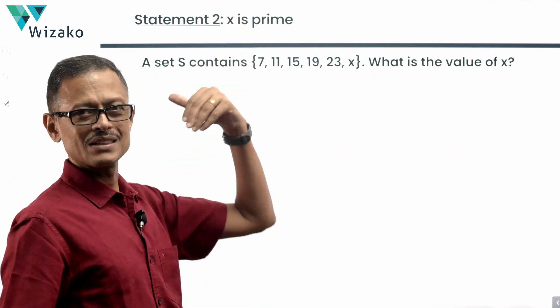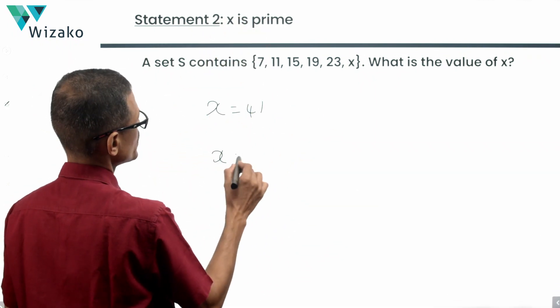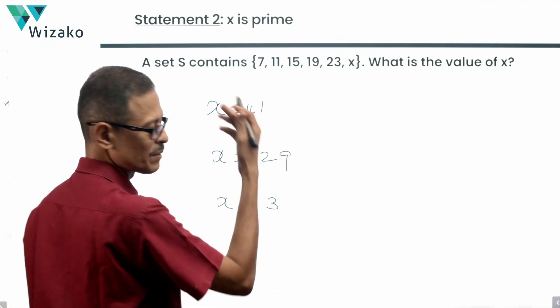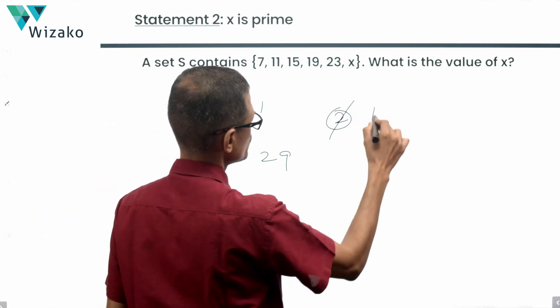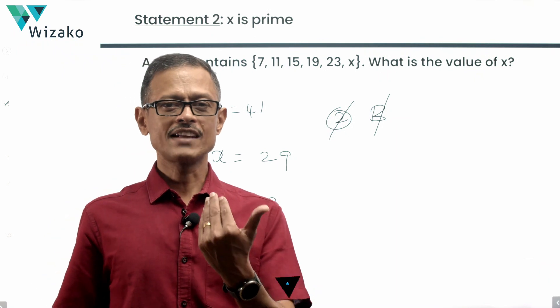Let's see whether statement two alone will help us evaluate it. See if x is prime, infinite possibilities. X could be 41, x could be 29, x could be 3. There are multiple possibilities, infinite possibilities. Statement two alone not being sufficient is so much easier to essentially come up with as a conclusion. So eliminate answer option B as well.